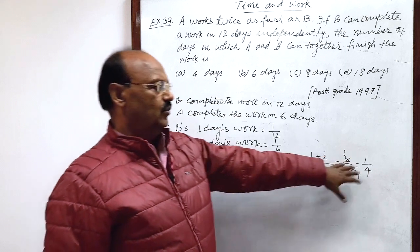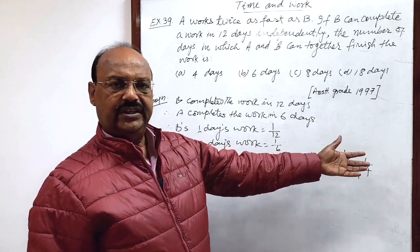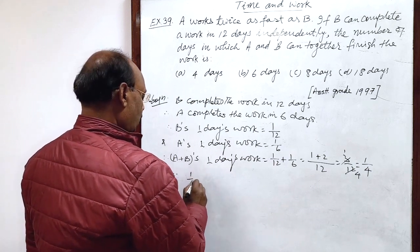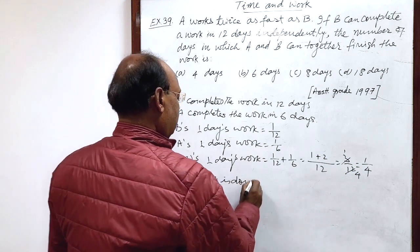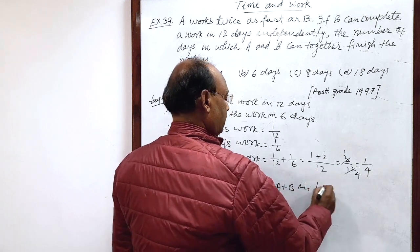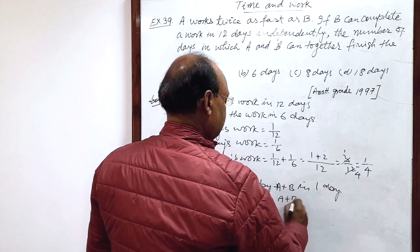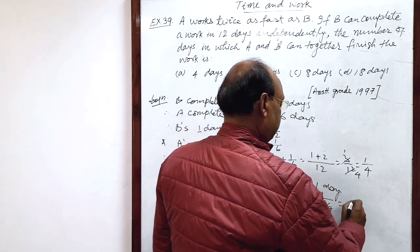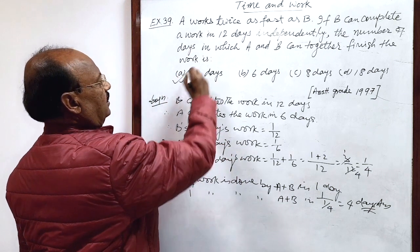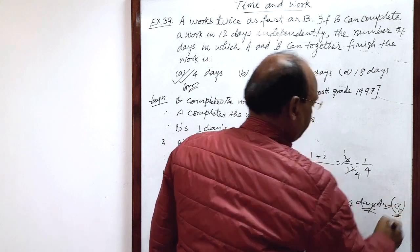So 1 by 4 work is done in 1 day by A plus B. Therefore, 1 work is done by A plus B in 1 upon 1 by 4, that is 4 days. This is the answer. Option A is correct. Very simple.